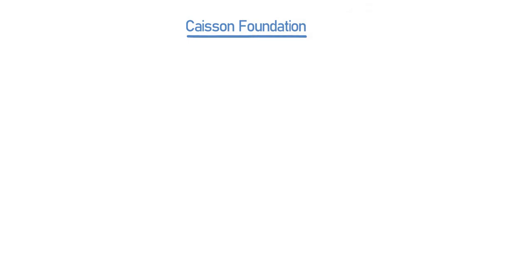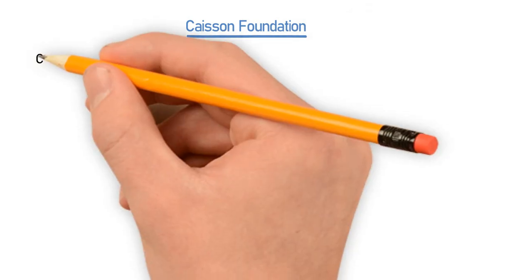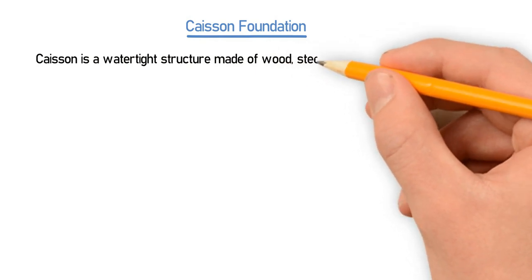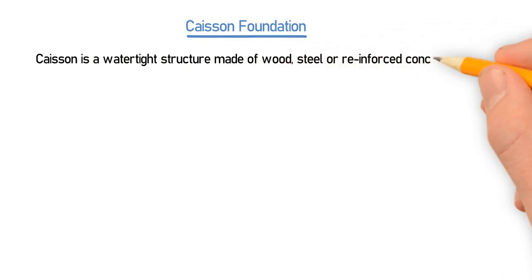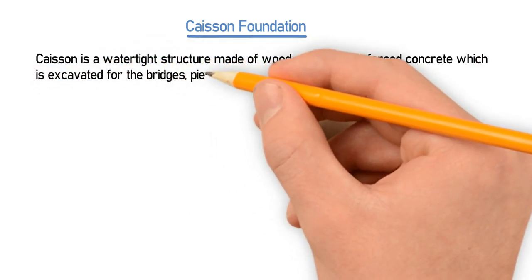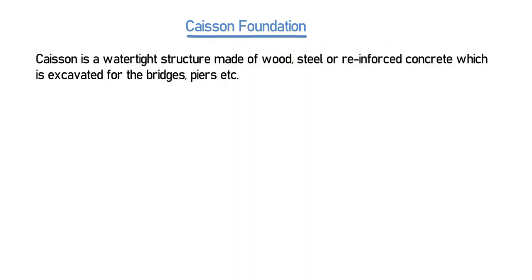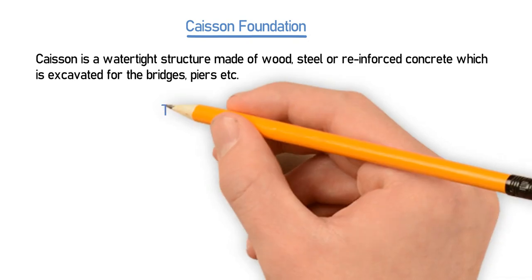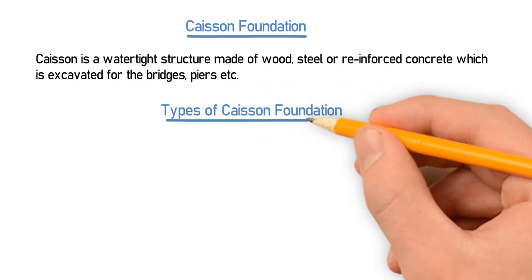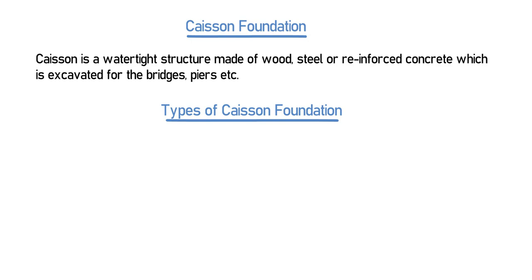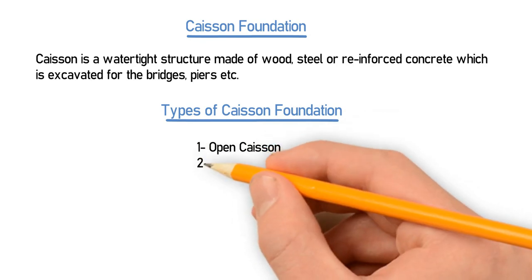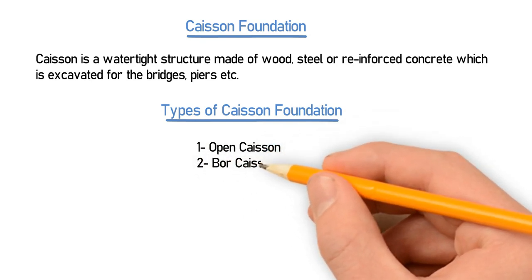The next type of deep foundation is caisson foundation. Caisson foundation is a watertight structure made of wood, steel, or reinforced concrete, which is excavated for the foundation of bridges or piers. There are various types of caisson foundation: number one is open caisson, number two is box caisson, and number three is pneumatic caisson.